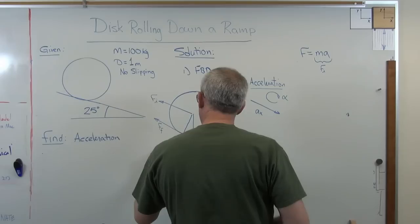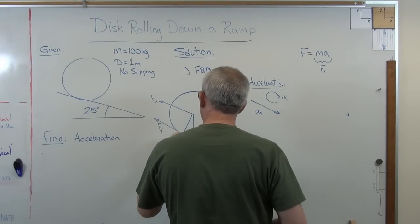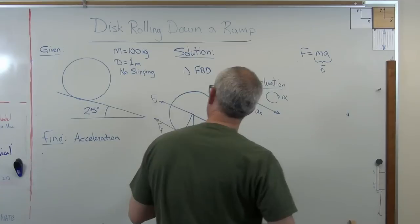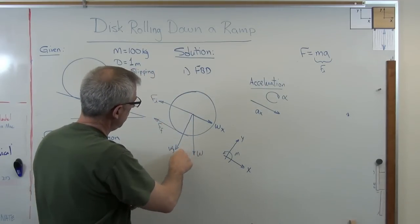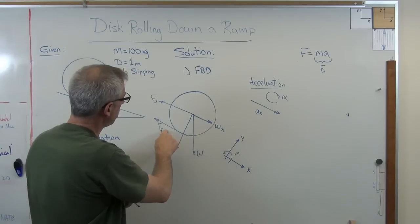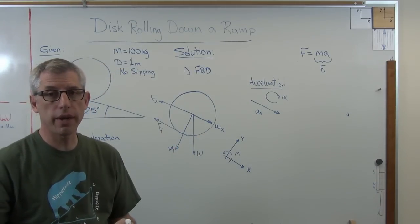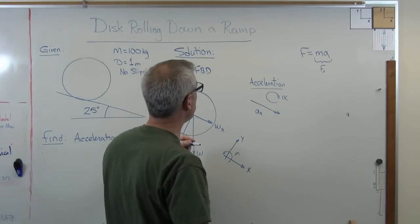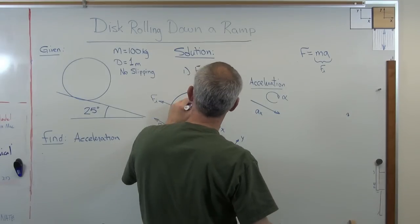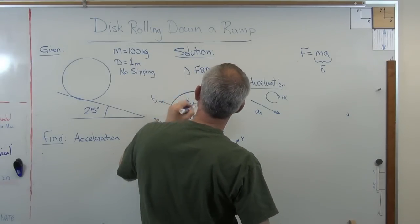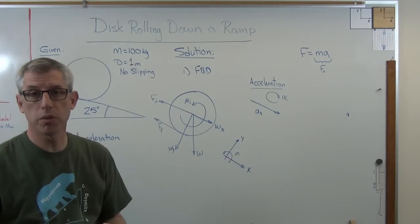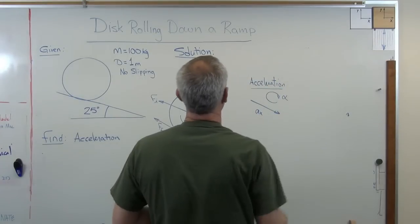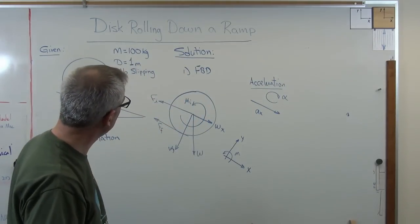So let me break the weight down into the Y component and the X component. So I've got inertial force, Y and X components of weight, friction force. There's one more thing I don't have on here, and that is inertial moment. So acceleration is clockwise. Inertial moment must be counterclockwise because inertial forces, inertial moments always act in the opposite direction of acceleration.